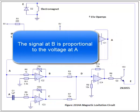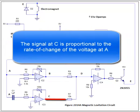The signal at B is proportional to the voltage at A. The signal at C is proportional to the rate of change of voltage at A.